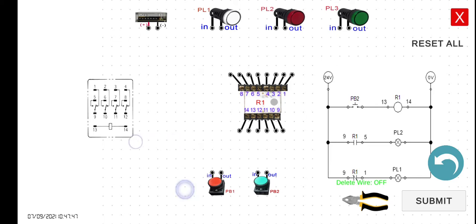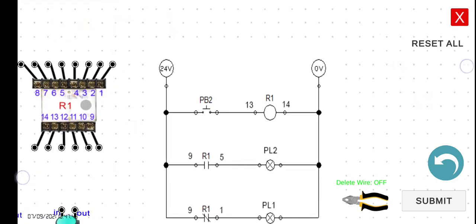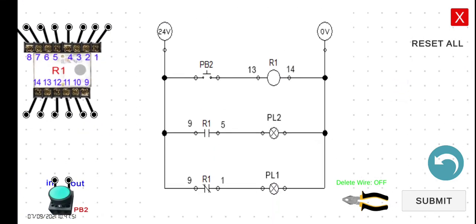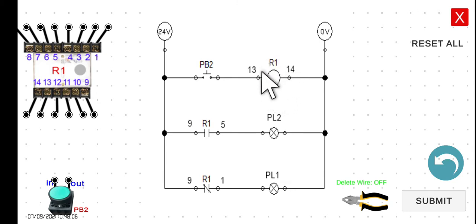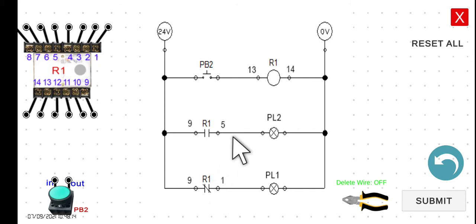The moment we turn on our power supply, current will not be able to flow through Line 1 because this is a normally open switch. This means the relay will be in its de-energized state. When de-energized, the normally open contacts remain open and the normally closed contacts remain closed.